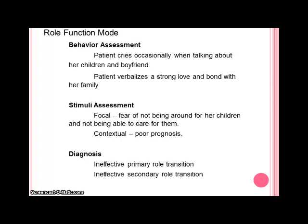Our final mode of assessment is the role function mode. When we assess her behavior, we see that she cries occasionally when talking about her children and boyfriend and verbalizes a strong love and bond with her family. For stimuli assessment, the focal stimuli is fear of not being around for her children and not being able to care for them. Contextually, it is the poor prognosis. Her level of adaptation in this role function is compensatory, as it is difficult for her to be integrated because areas of it will be permanently changed, such as her role as caregiver.